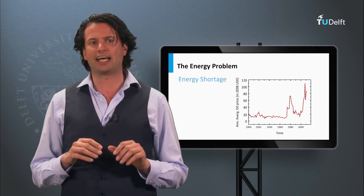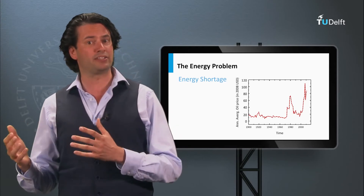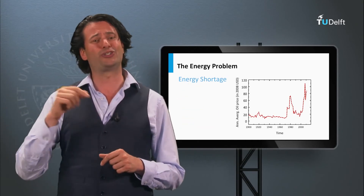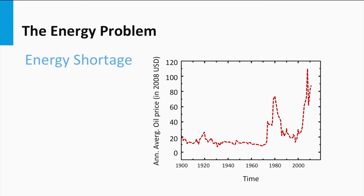The increasing demand in energy has economic impact as well. If there is more demand for a product while supply does not change much, the product will get more expensive — this is also true for energy. As an example, we show a plot of the annual average price for an oil buyer, normalized to the value of the 2008 US dollar. You can see that prices went up during the oil crisis in the 70s, when some countries stopped producing and trading oil for a while. The second era of higher oil prices started at the beginning of this millennium, due to the increasing demand from new growing economies.